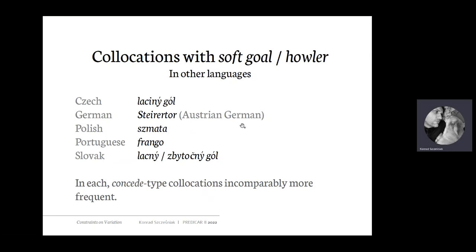Here is how 'soft goal' is translated in other languages: in Czech it's 'laciný gól,' in German it's 'Steherer' in Austrian German — though German does not have a good translational equivalent of soft goal, as native German speakers I asked couldn't come up with one. In Polish it's 'szmatą,' in Portuguese it's 'frango' (chicken), and in Slovak it's 'lacný' or 'zbytočný gól.' Interestingly, for each language you have the exact same asymmetry in favor of concede-type verbs.